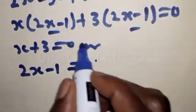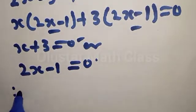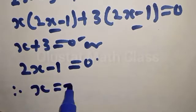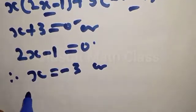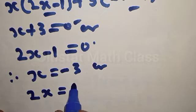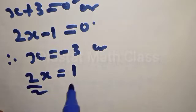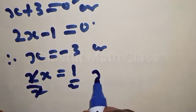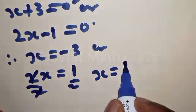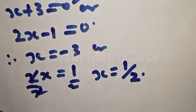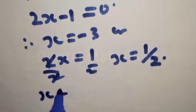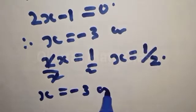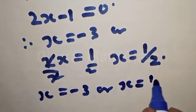Then, X plus 3 — because of this — equal to 0, or 2X minus 1 equal to 0. Therefore, from the first one, X is equal to minus 3. From the second, 2X is equal to 1 — that is, if minus 1 crosses the other side it becomes 1 — then divide both sides by 2. Therefore, X equals 1 over 2.